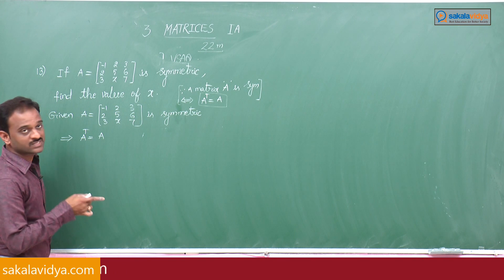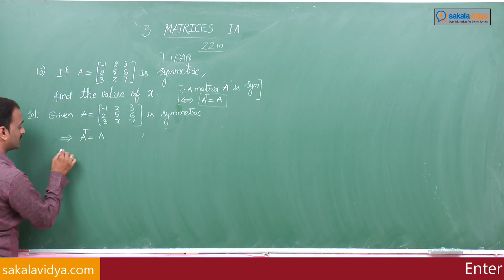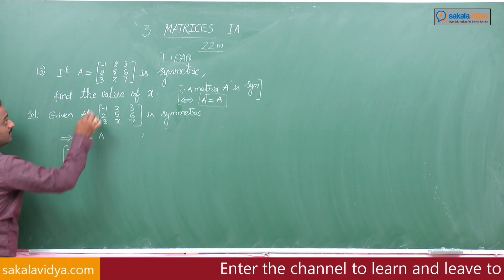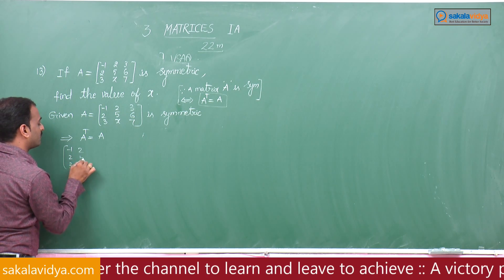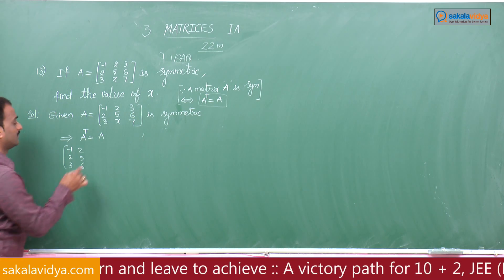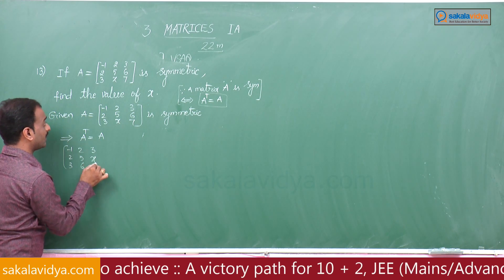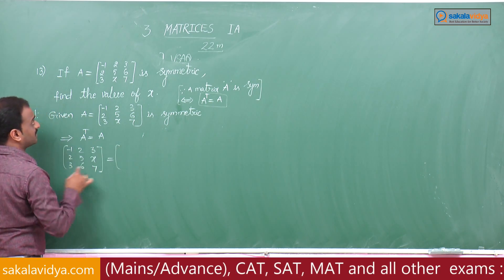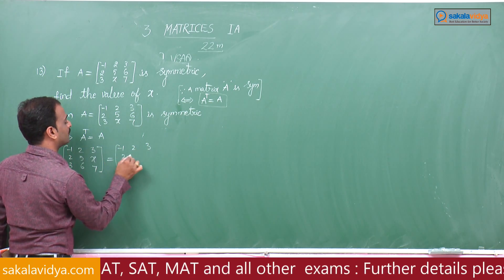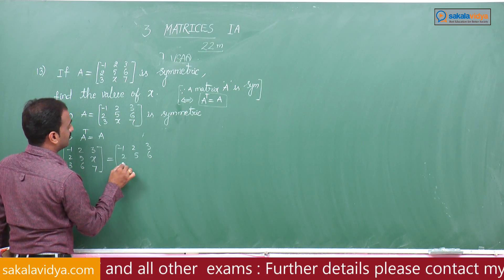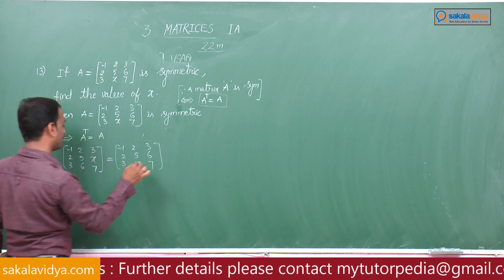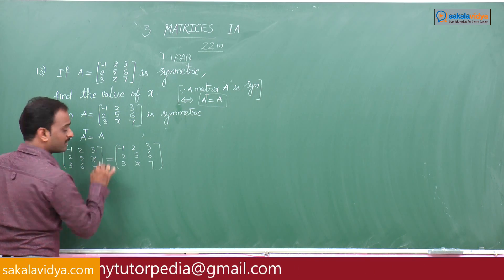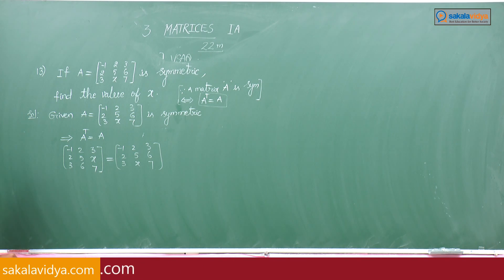First we write the transpose of the given matrix A. Matrix A equals minus 1, 2, 3, 2, 5, 6, 3, x, 7 — the third row will be changed into the third column. This equals the given matrix A: minus 1, 2, 3, 2, 5, 6, 3, x, 7. Since two matrices of the same order are equal, we can equate the corresponding elements.